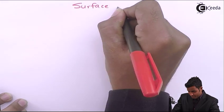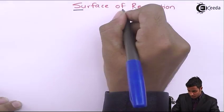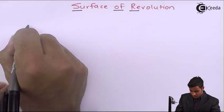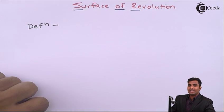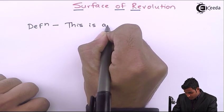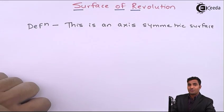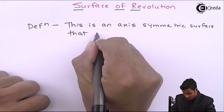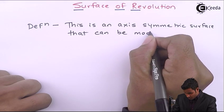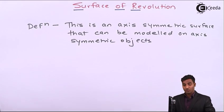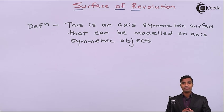Hello friends, in this video we will study surface of revolution. First we will write the definition for surface of revolution. It is an axis-symmetric surface that can be modeled only on axis-symmetric objects, so for surface of revolution, axis-symmetric objects play an important role.